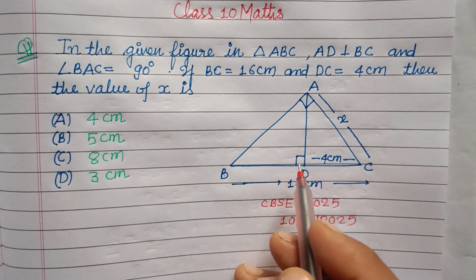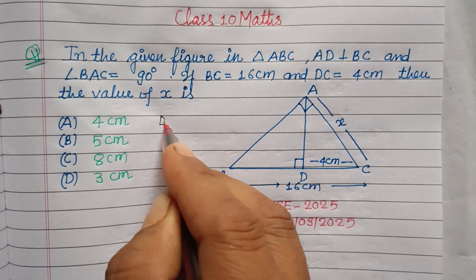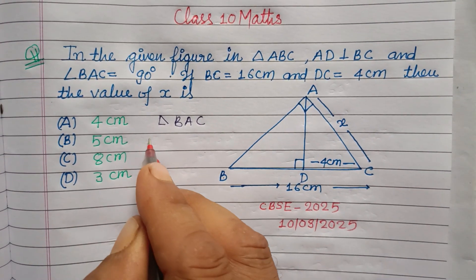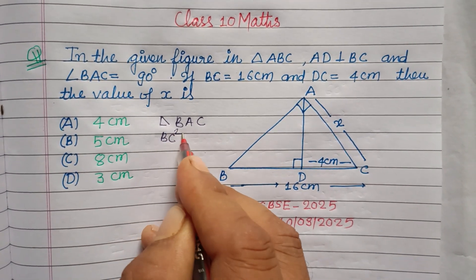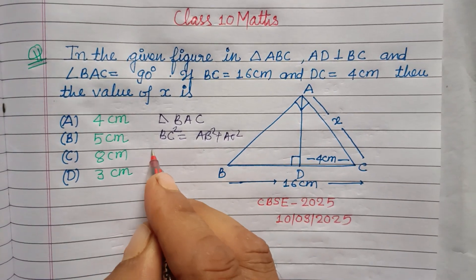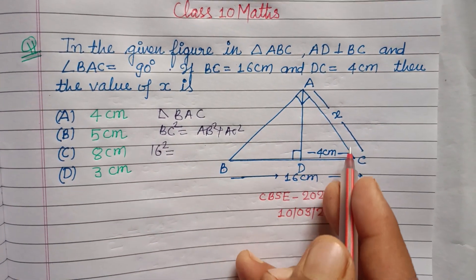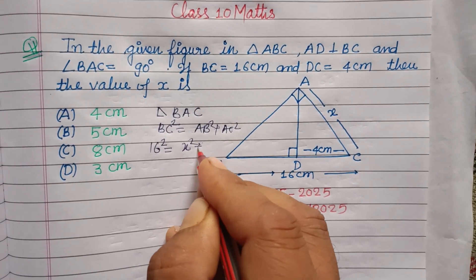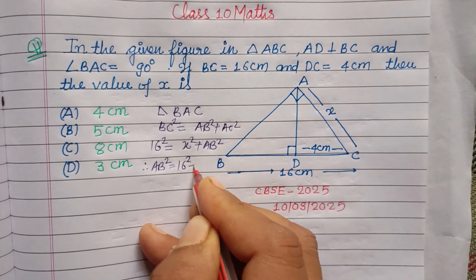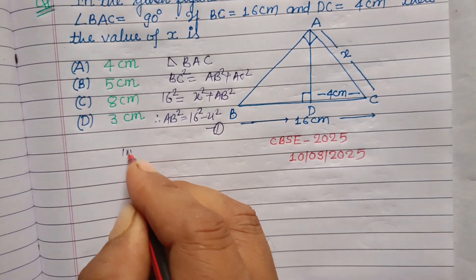First, we take right angle triangle BAC and apply the Pythagorean theorem: BC² = AB² + AC², so 16² = X² + AB². Therefore, AB² = 16² - X². This is our first equation.